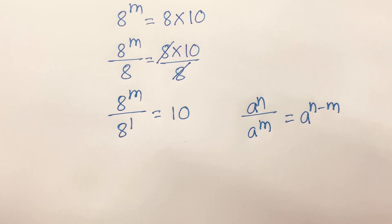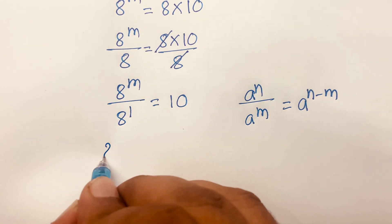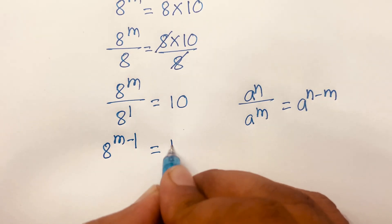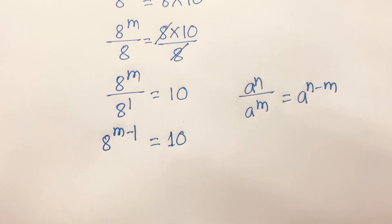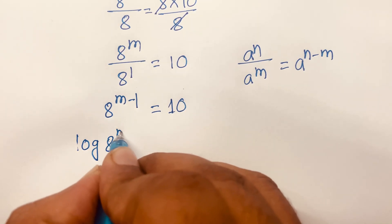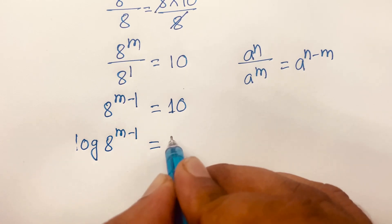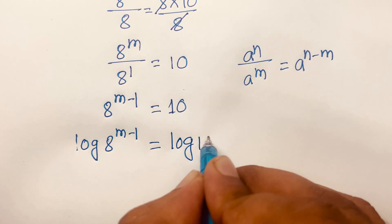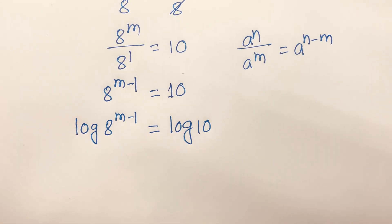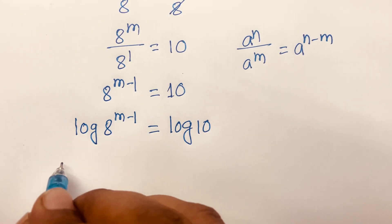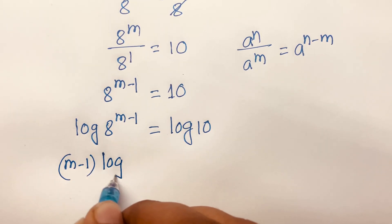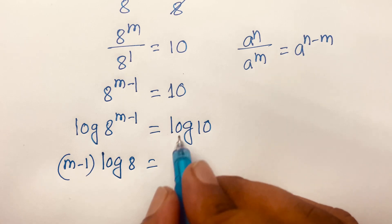According to this exponential rule, 8 power m minus 1 is equal to 10. Then I apply log to both sides, so log of 8 power m minus 1 is equal to log 10. The exponent moves to the front according to logarithm rules, so m minus 1 times log 8 is equal to log 10.